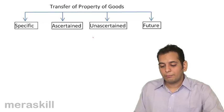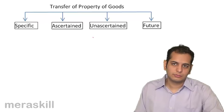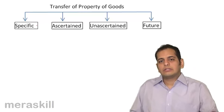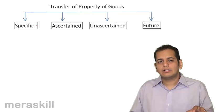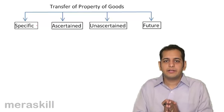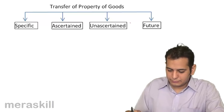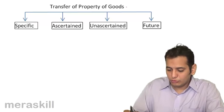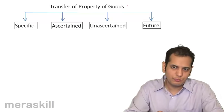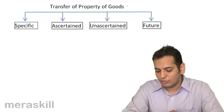Transfer of property of goods. We know that goods are bifurcated into three types. First is existing, second is future, third is contingent.